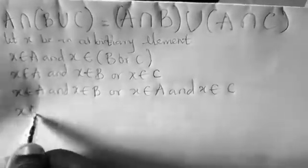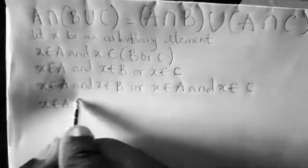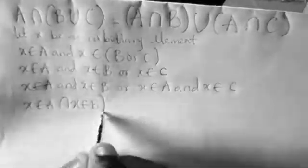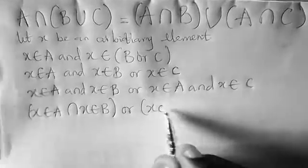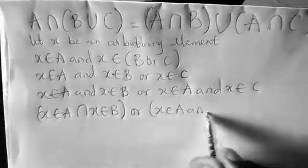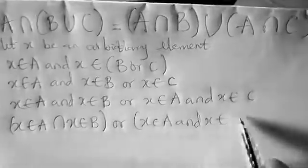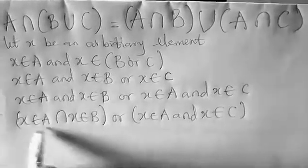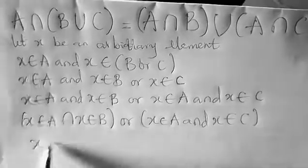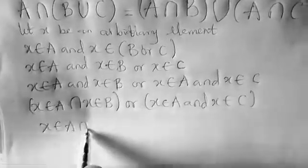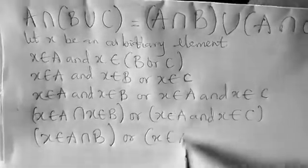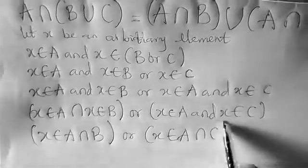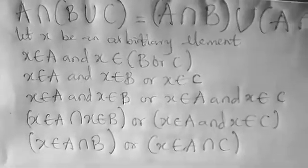So that means x is a member of (A ∩ B) or x is a member of (A ∩ C). So since your x is an arbitrary element...